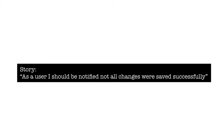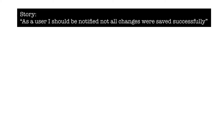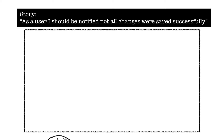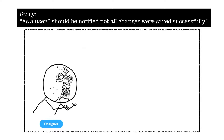Picture this scenario. You've been assigned a simple story about notifying a user that all the changes he made were saved successfully. In your mind, it is obvious that an alert message should be used. But when you tell this to your dev team, people have their own idea of what an alert message is.